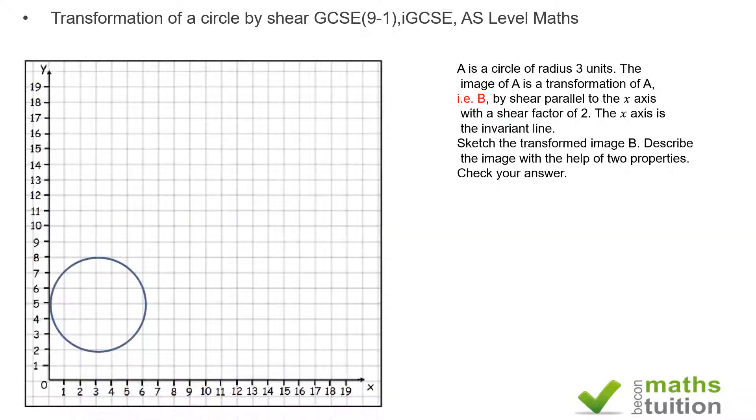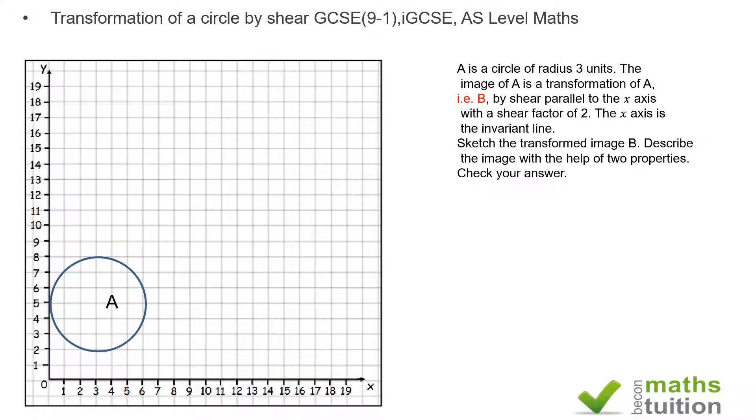It says A is a circle of radius 3 units. The image of A is a transformation by shear parallel to the x-axis with a shear factor of 2. The x-axis is the invariant line.